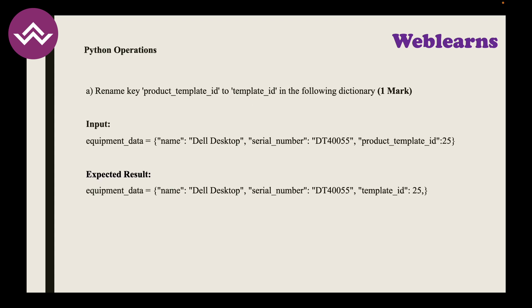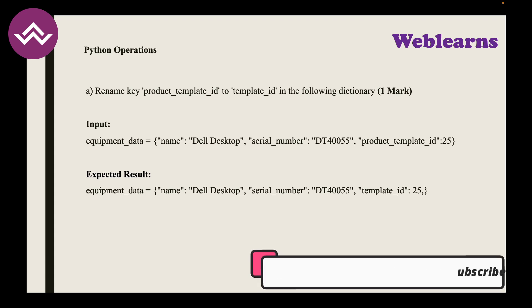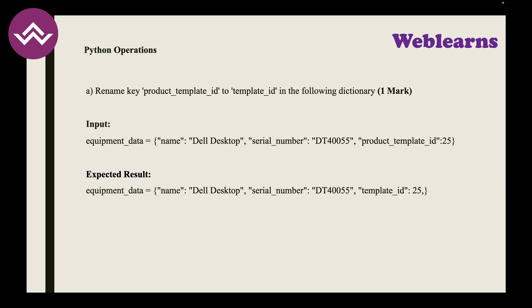Python Exercise 1: There is a variable called equipment_data in dictionary format containing name, serial_number, and product_template_id. Write a simple Python code to replace the key 'product_template_id' with just 'product_id'. Once done, you achieve one mark.